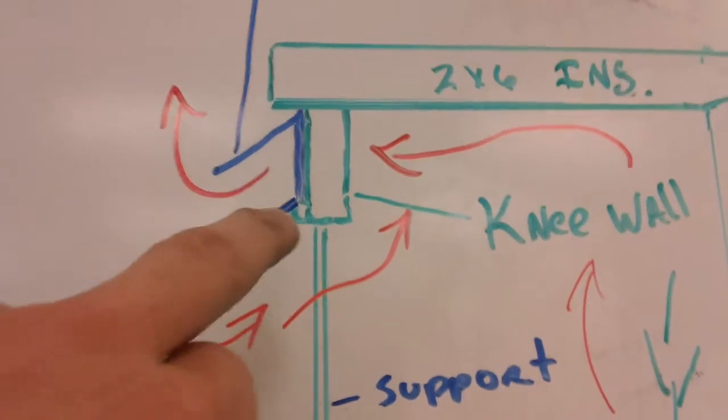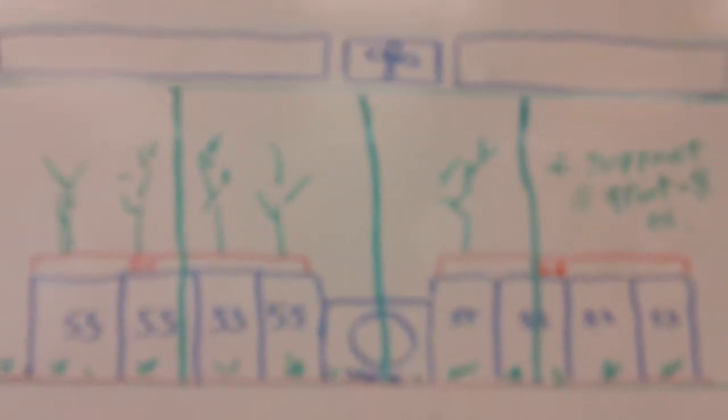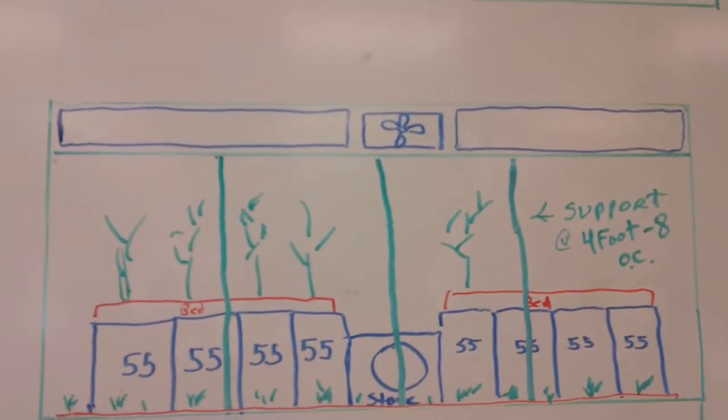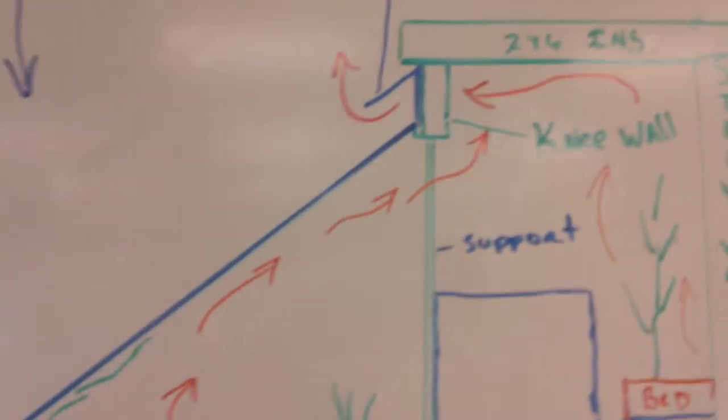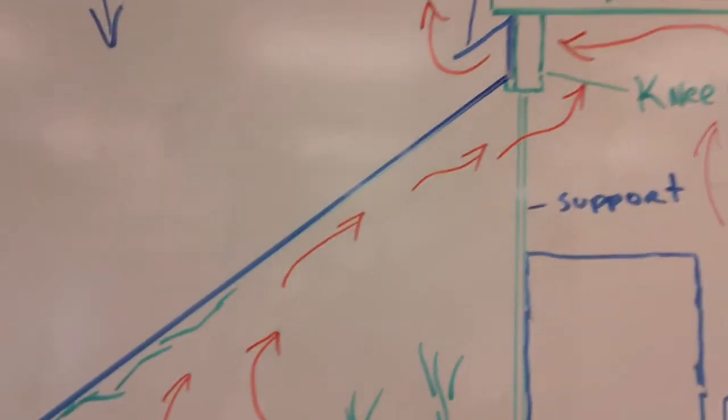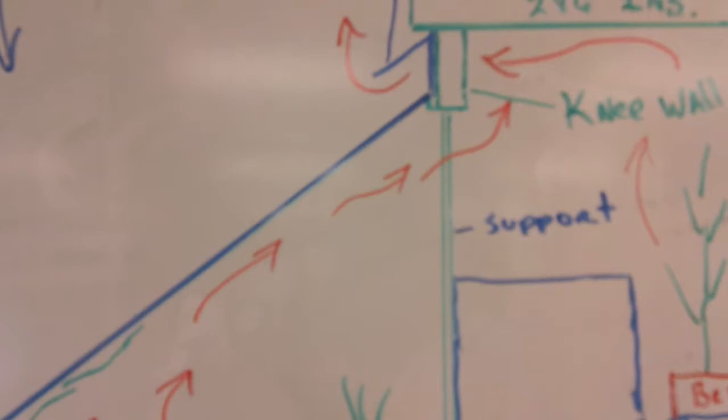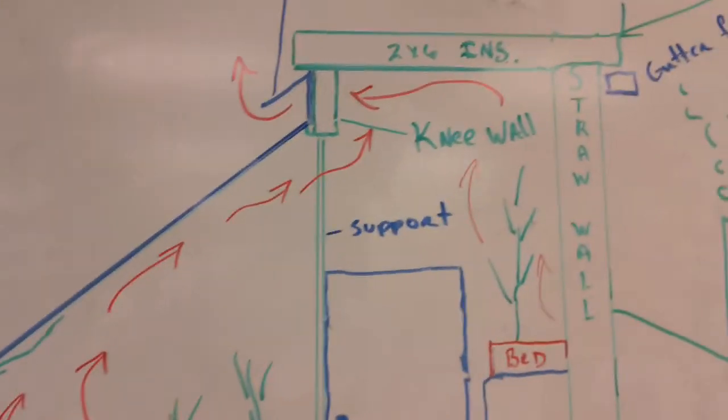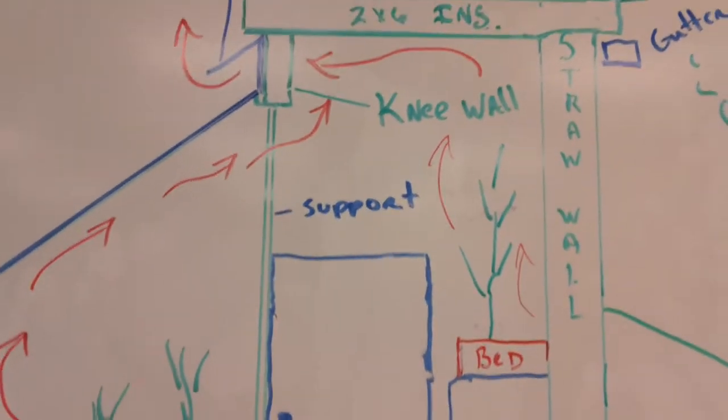Another thing that that knee wall does is it allows, if you see it on a front view, these would represent windows across the front, which would be able to be opened in the summertime to help regulate heat. And they're in the high spot of the greenhouse, so all the heat naturally rolls right there anyway, and so that really lets that heat out. It's at the right location to roll it out. It's at the highest point.